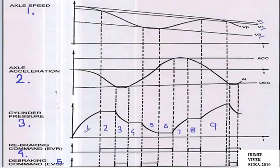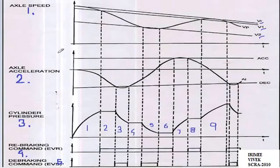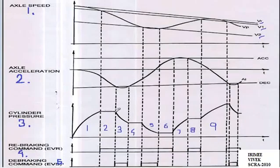Graph 3, Region 1: The brake cylinder pressure is increased to apply brakes because, corresponding to it in Graph 1, the axle speed is above the desired range of V2. In order to bring the axle speed within the desired working range of V1 to V2, brakes are applied, resulting in axle deceleration as shown in Graph 2. Region 2: Brake cylinder pressure is maintained at a constant value — there is no variation in braking — since axle speed is within the desired range of V1 to V2. Resultant to this, the axle is further decelerating as shown in Graph 2.